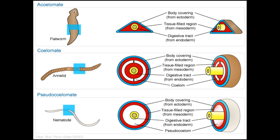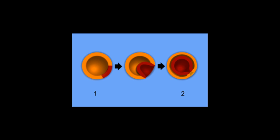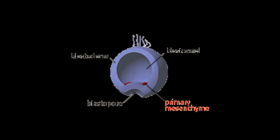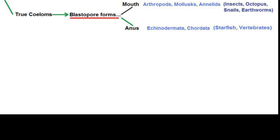As an organism is developing, it first starts out as a ball of cells, and then one side of that ball basically gets indented. Think about taking a tennis ball and pressing your finger into the side of it. That indentation is basically called a blastopore. Now, that blastopore can become one of two things: it can either become the mouth or become the anus. If the blastopore becomes the mouth, that organism is called a protostome.